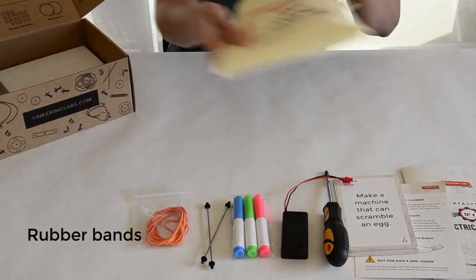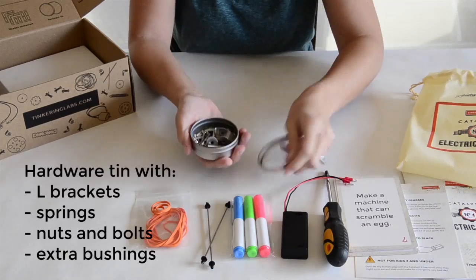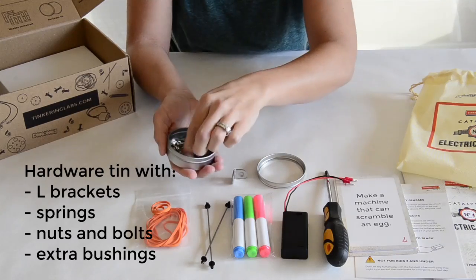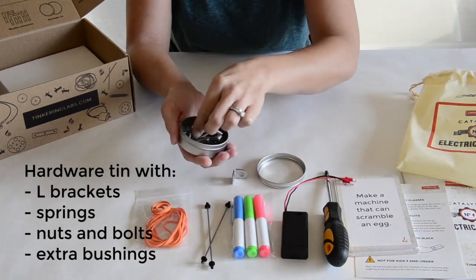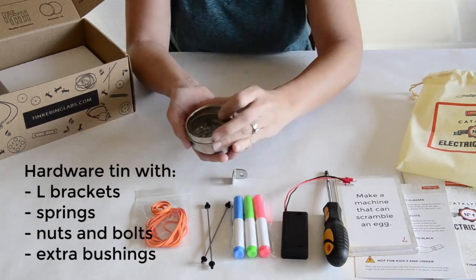There are rubber bands to make connections and a hardware tin. Inside the tin you've got L brackets, springs, nuts and bolts, and extra bushings just in case you lose some and also to add on to your motor tips.